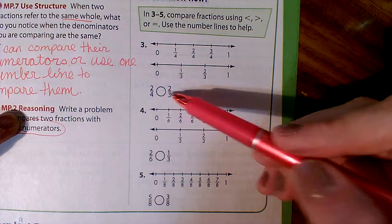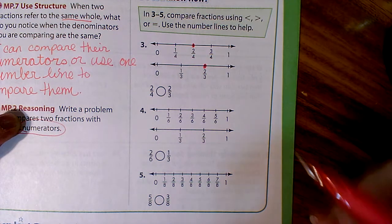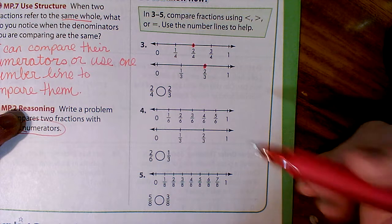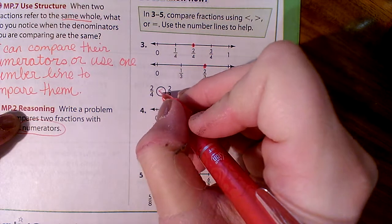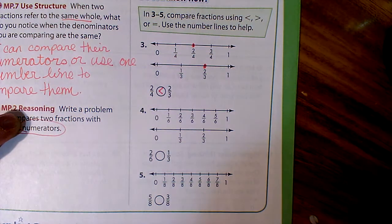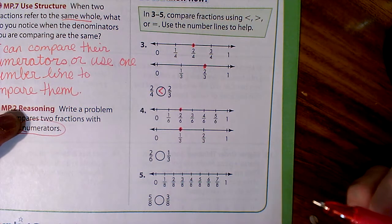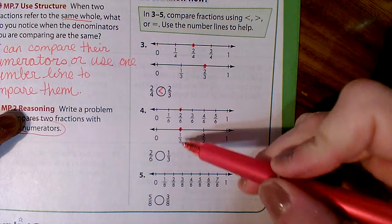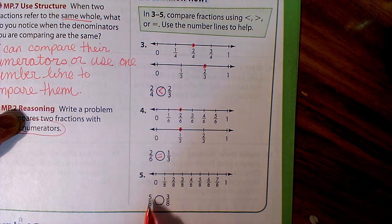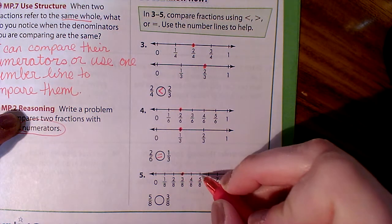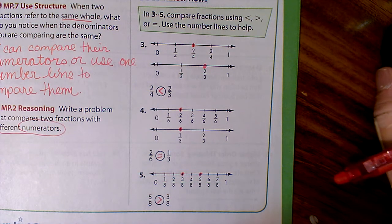Number three: we have two-fourths and two-thirds. Two-thirds is further to the right, which means two-thirds is the larger number, so two-fourths is less than two-thirds. How about two-sixths and one-third? Two-sixths and one-third are both at the same point on the number line, so two-sixths is equal to one-third. Now we have five-eighths and three-eighths. Five-eighths is further to the right, which means it is greater than three-eighths.